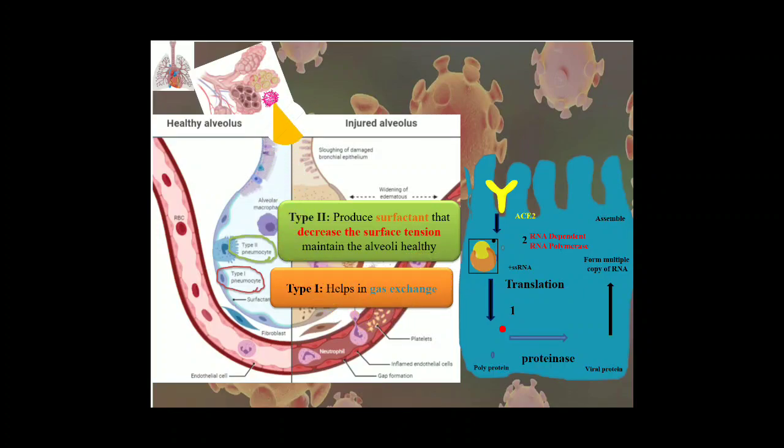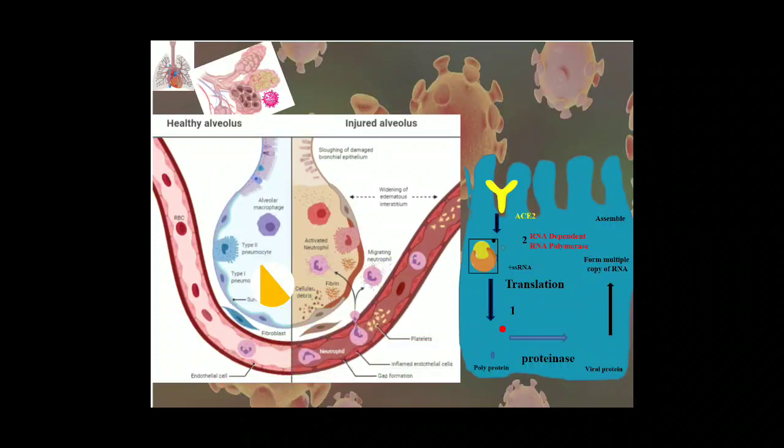Now this virus will come and attack or attach to the type 2 pneumocyte. So let us see here, this virus is coming here and it attaches to the type 2 pneumocyte. Here I am showing how this virus is replicating. So here is the enlarged view. The virus first comes to the alveoli and attaches to the ACE2 receptor. What is the full form of this ACE receptor? This is angiotensin converting enzyme that is present in our alveolar cell. And due to this receptor, this virus is able to transfer its genetic material that is positive sense RNA.